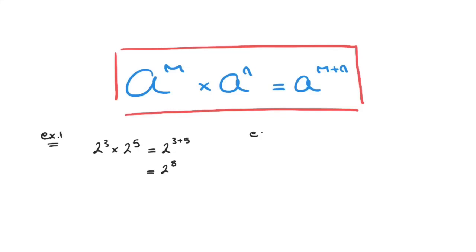Another example could be to simplify p raised to the power of 4 times p raised to the power of 3. Then using this rule, we can state that this equals to p raised to the power of 4 plus 3, which is p raised to the power of 7.